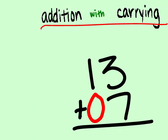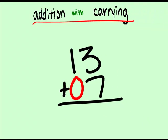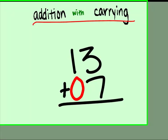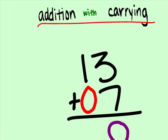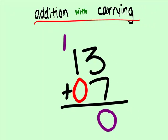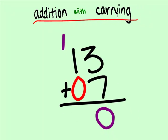Next, let's solve the problem. 3 plus 7 is 10. Since 10 has two digits, we are going to have to carry. We put the second digit, which is the zero, in the answer and the first digit, the one, above the next row to the left. Next, you have to add the row to the left. 1 plus 0 is 1, plus this carried 1 is 2. 13 plus 7 is 20.